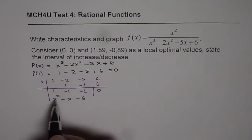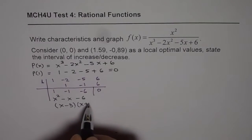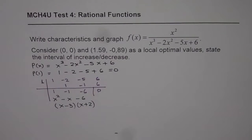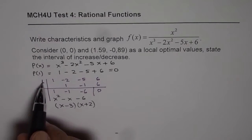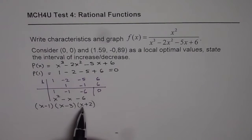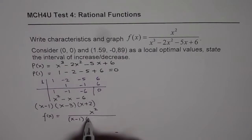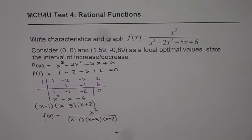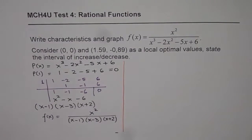The quadratic x² minus x minus 6 factors as (x minus 3)(x plus 2). So we can now write p(x) fully factored. Combined with the factor (x minus 1) from synthetic division, we can write our function f(x) as x² divided by (x minus 1)(x minus 3)(x plus 2). That is the function in factored form, making it easier to sketch.